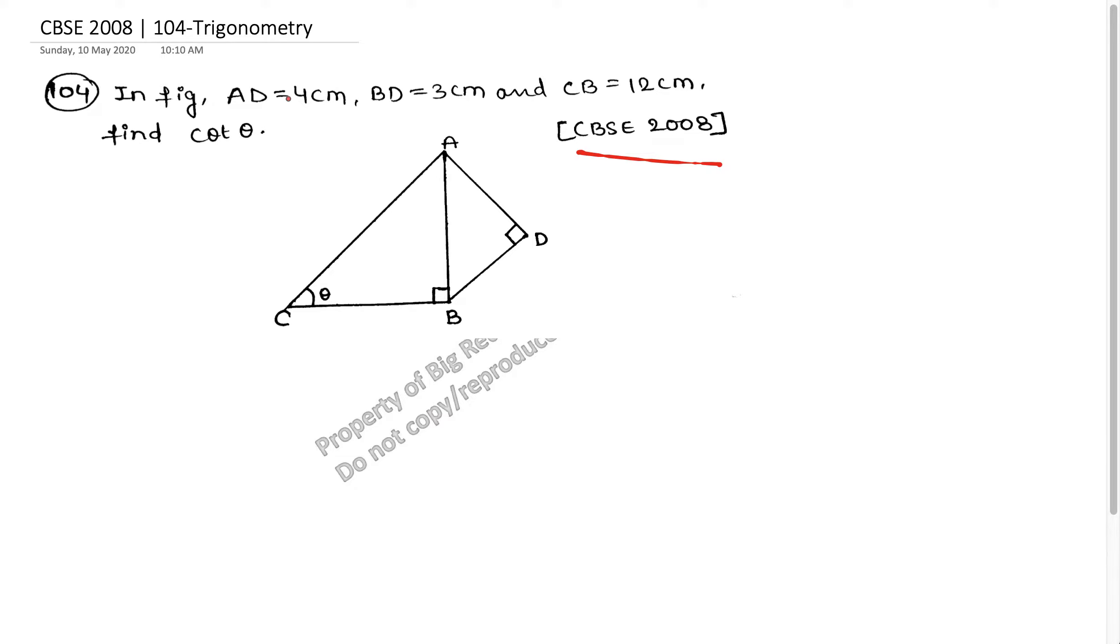Let's start solving this one. The question says this is the figure and in the figure AD is equal to 4 cm, BD is equal to 3 cm, and CB is equal to 12 cm. Find cot theta.